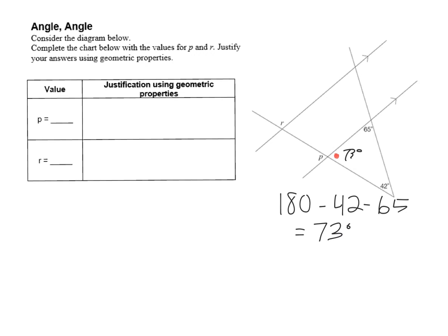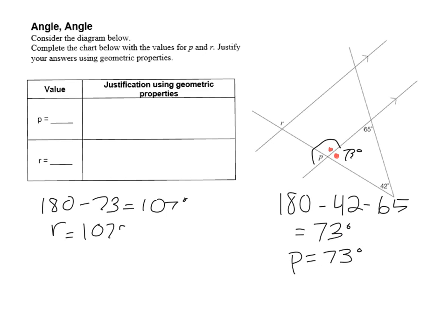Then I can observe that P and 73 degrees are opposite angles, so P equals 73. Now to find R, I could find the supplementary angle of 73 degrees using the supplementary angle theorem: 180 minus 73 equals 107 degrees. Because those two angles are corresponding angles, R equals 107 degrees. So in my chart I would write R equals 107 degrees and P equals 73 degrees.